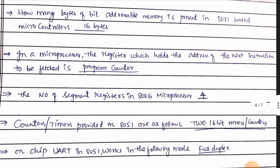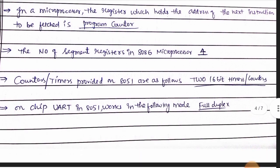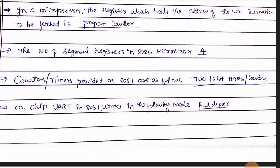Coming to the Bits Store, this is the important bits section. How many bytes of bits address for memory? This was discussed last time — it is 16 bytes. In the microprocessor, the register which holds the address of the next instruction to be fetched is the program counter. The number of segment registers in the 8086 microprocessor is 4.